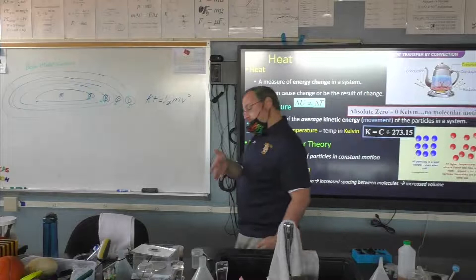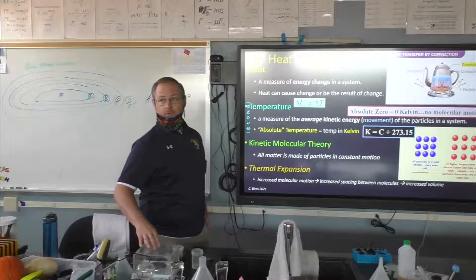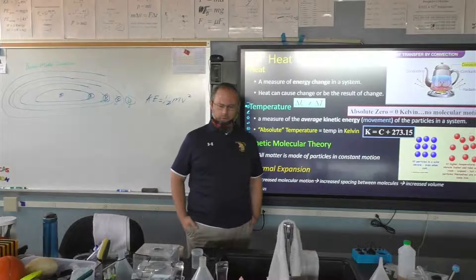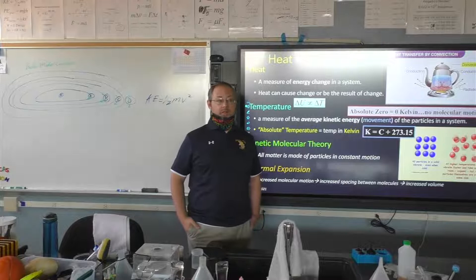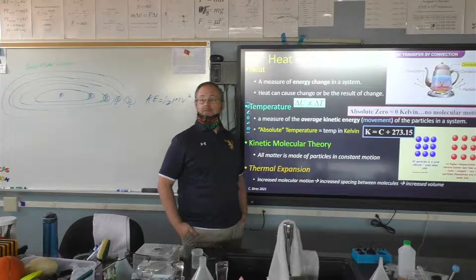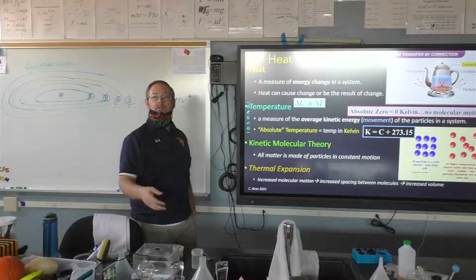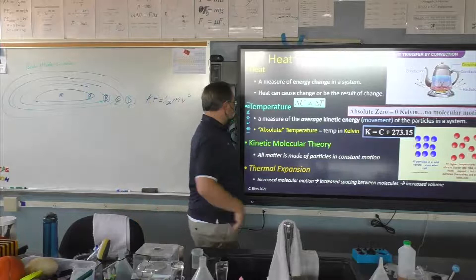Two notable exceptions: ice between roughly negative five and zero degrees, and water from about one to three degrees — it's backwards. You might notice that ice floats on its liquid. Solid water floats on liquid water, but most things don't do that. Most things when they solidify become more dense. It's one of the craziest things — most things are more dense in their solid phase.